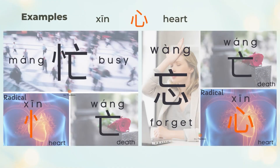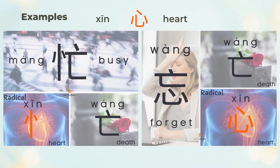忙 means busy. 忙 is the left 心 (heart) and the right 亡 (death). If you are too busy, your heart might be dead. 忘 means to forget. 忘 is the top 亡 (death) and the bottom 心 (heart). If your heart is dead, you forget about things. Both characters use the same 亡 and 心, but in two forms to form two different characters.